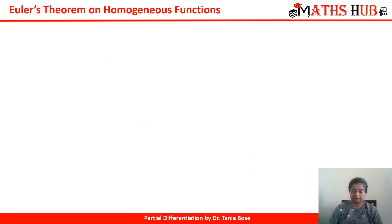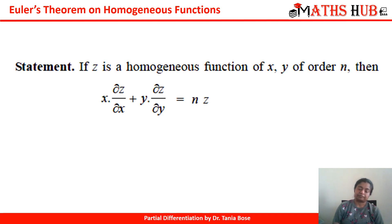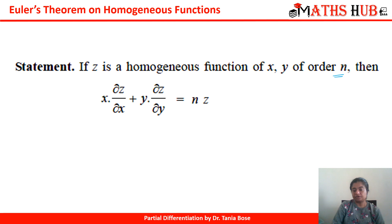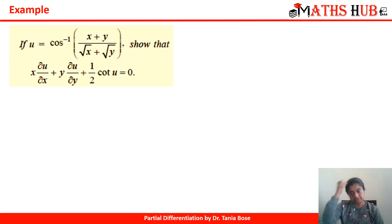Now let's look at a very important theorem — Euler's theorem on homogeneous functions. It states that if z is a homogeneous function of x and y of order n, then x·(∂z/∂x) + y·(∂z/∂y) = n·z. That is, when you take the partial derivatives, multiply by their respective coefficients x and y, and add them, the result always equals n times the function.